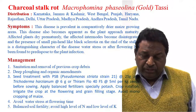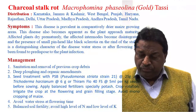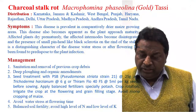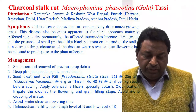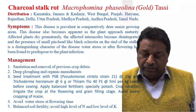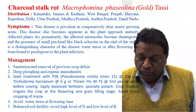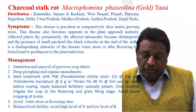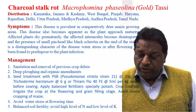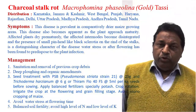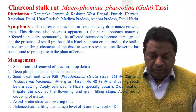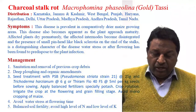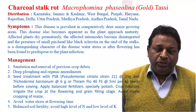The affected internodes become disintegrated, and the presence of small peanut-like black sclerotia are found in the rind of the stalks, which is a distinguishing character of this disease. Water stress after flowering has been found to predispose the plant to infection. The presence of black sclerotia in the rind of the stalk can be seen and is a key symptom of Charcoal Stalk Rot.